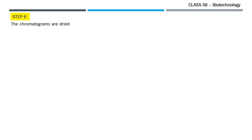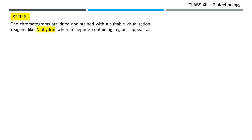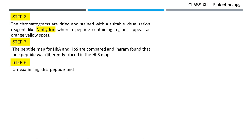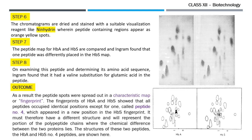Once these chromatograms were generated, they were dried and stained with a suitable visualization reagent like ninhydrin, where the peptide-containing regions would appear as yellow spots. Then the peptide map for the normal hemoglobin and the sickle cell hemoglobin were compared, and Ingram found that one peptide was differently placed in the sickle cell hemoglobin map. On examining this peptide and determining its amino acid sequence using the Edman degradation method, Ingram found that it had a valine substitution for glutamic acid at the sixth position of the amino acid.